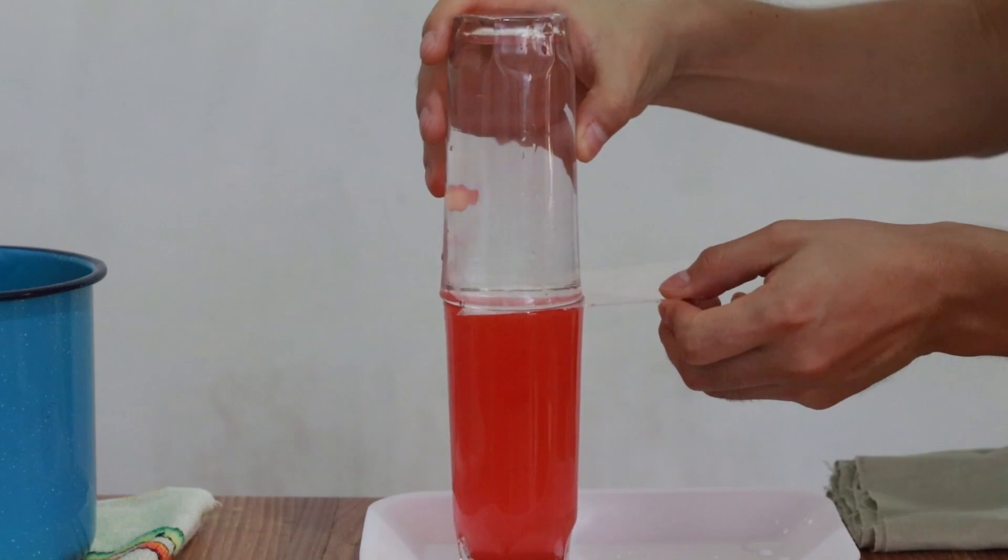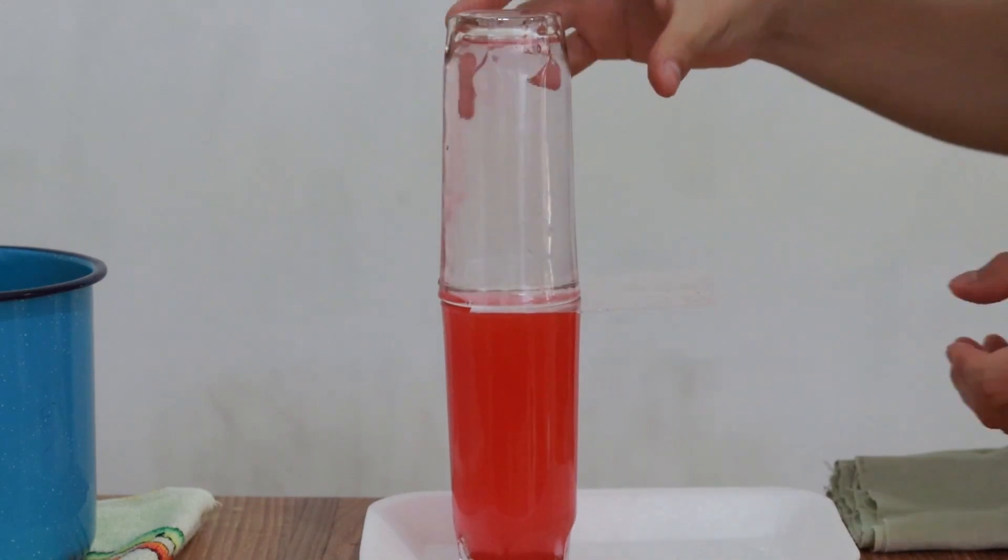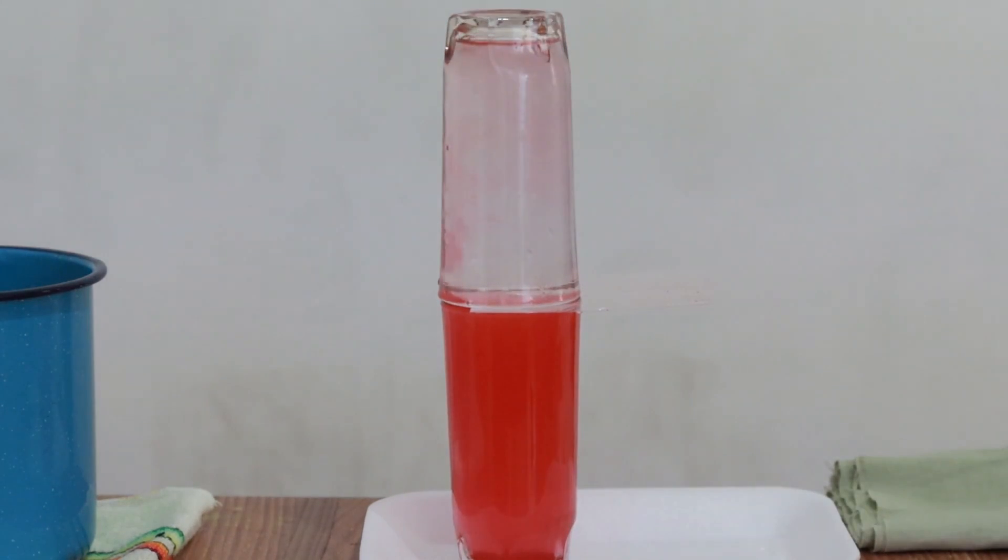We will see that the hot water begins to rise towards the glass of cold water. This is because hot water has a lower density than cold water. Therefore hot water rises and cold water falls, generating a flow of water. And this is what we call convection.